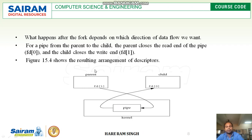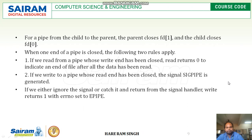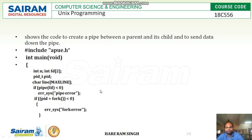This is shown in the diagram. For a pipe from child to parent, the parent closes fd[1] and the child closes fd[0]. All the scenarios discussed are illustrated in the diagrams provided.